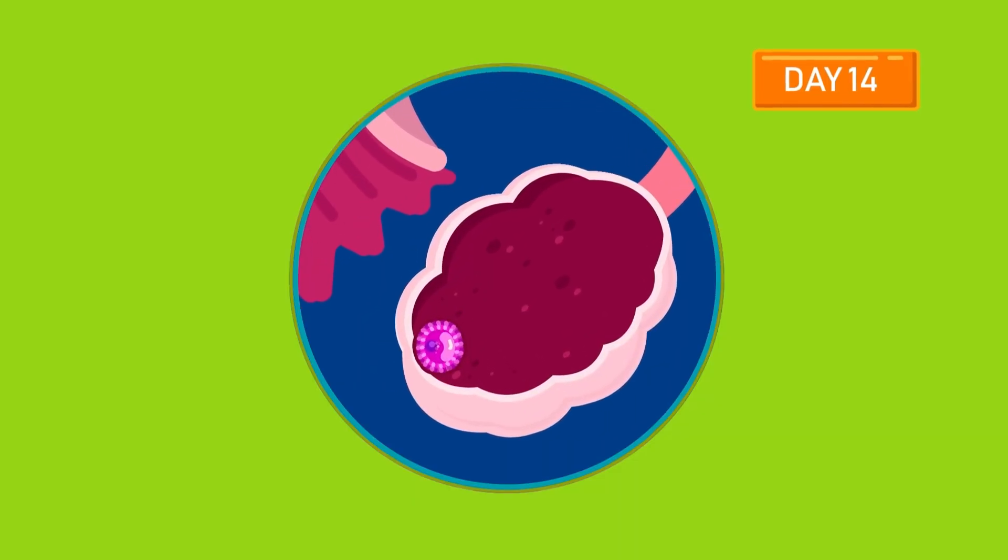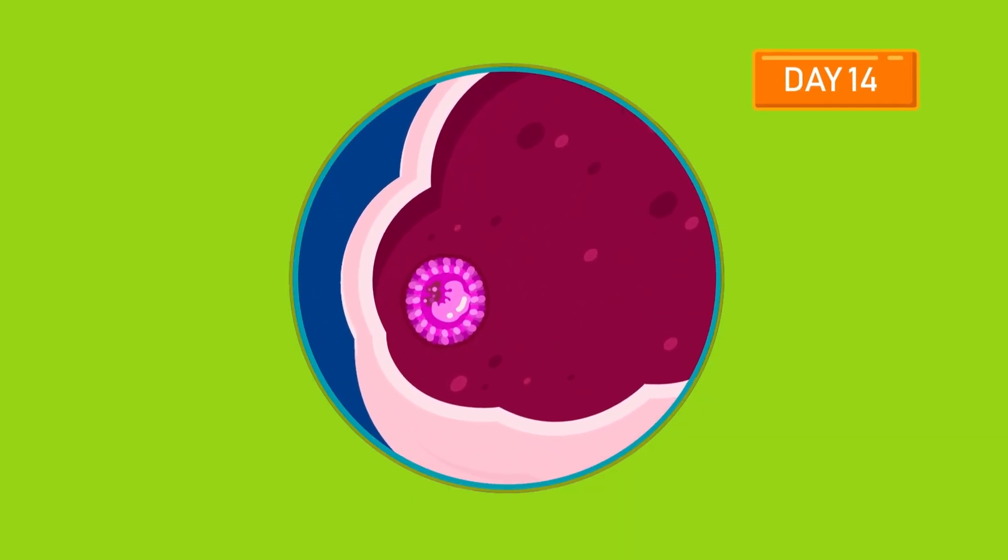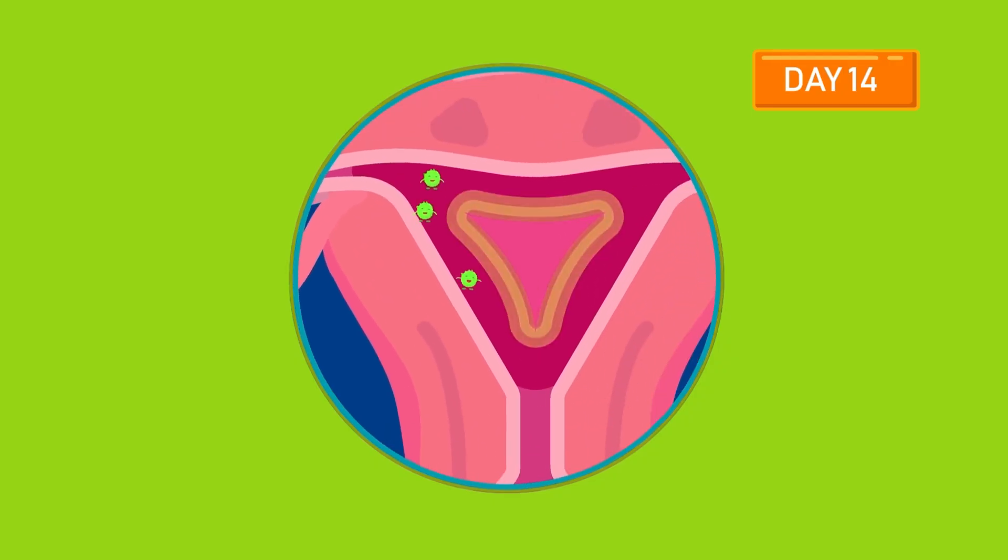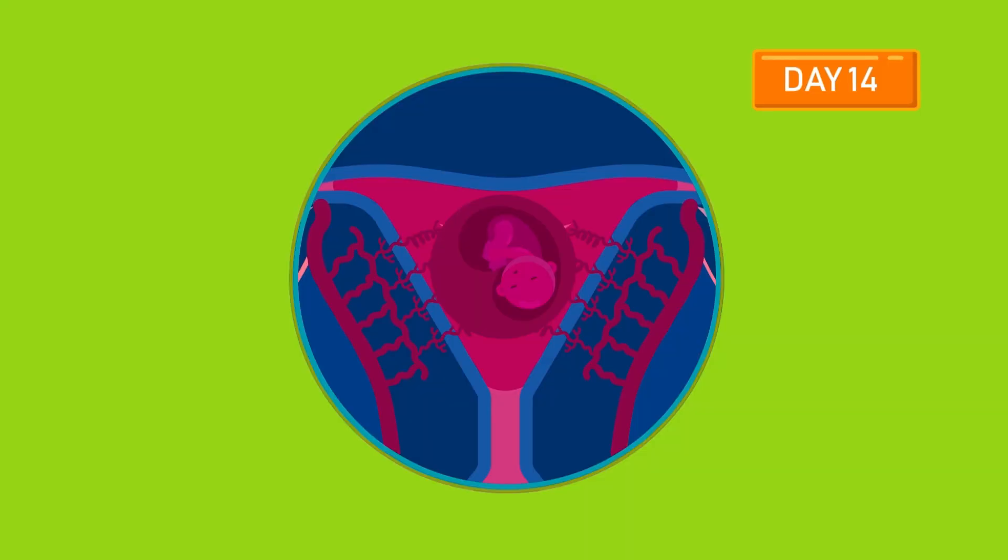On day 14, a mature ovum is released from the ovaries. The Graafian follicle becomes corpus luteum. This cell, the corpus luteum, releases progesterone along with some estrogen. Progesterone causes the uterine lining to remain thick and soft, well supplied by blood vessels, and endometrium is ready for pregnancy.